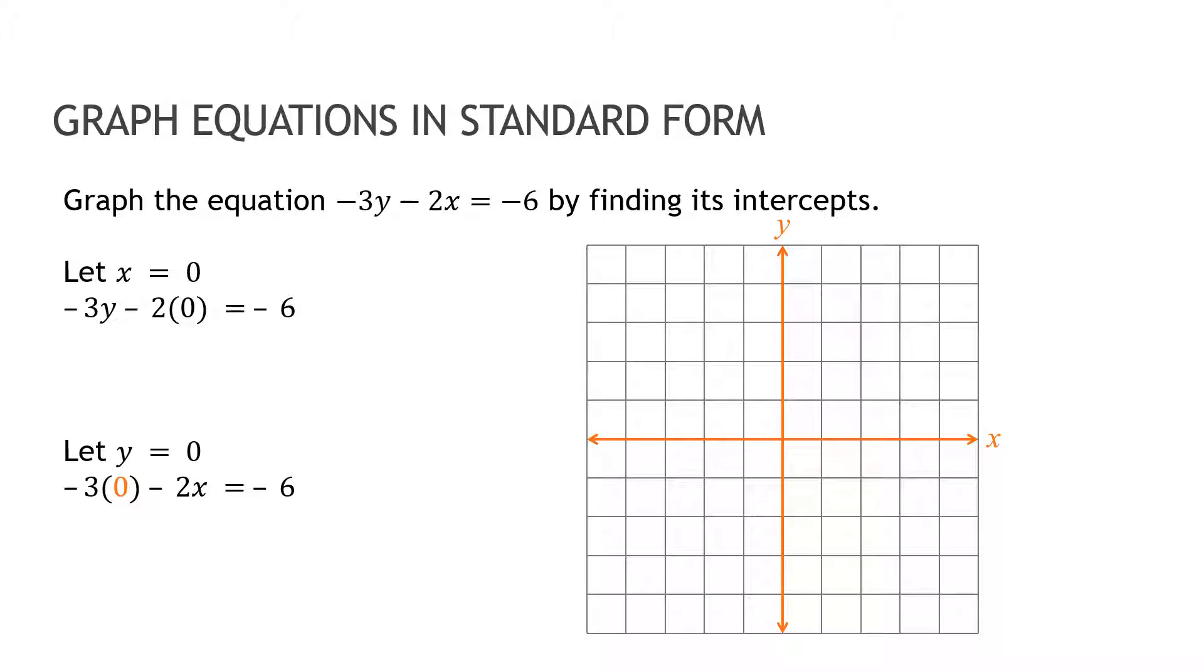So I'm going to graph this equation by finding the intercepts, and first I'm going to let x equal zero. Notice I've already started that one for you. So I'm saying, hey, if x equals zero, then it's minus 3y, and then minus zero equals negative six, which is really negative 3y equals negative six. Divide each side by negative three, so y equals two, and on the y-axis, I'm going to plot two.